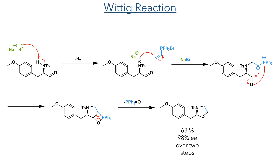This aldehyde was taken forward as crude and subject to a Wittig reaction. The amine is firstly deprotonated by sodium hydride, and the nitrogen anion that is formed can then attack triphenylvinyl phosphonium bromide. This forms the ylide necessary for the intramolecular Wittig reaction. This ylide attacks the aldehyde to form the four-membered oxyphosphetane intermediate, that can then undergo a cyclo-reversion to eliminate triphenylphosphine oxide, forming the dihydropyrrole in a 68% yield with 98% ee over two steps.